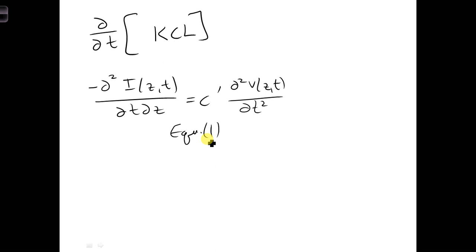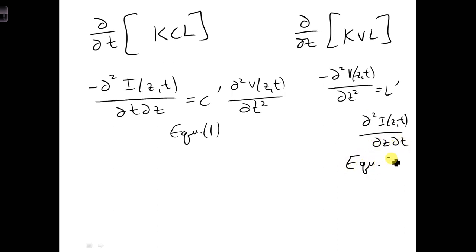Then if we take the spatial derivative of the KVL equation, we would get the following. I'm going to call this equation 2.